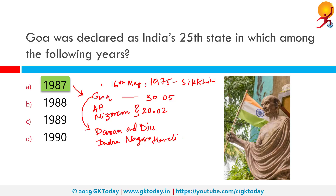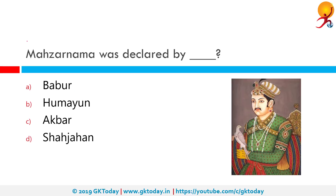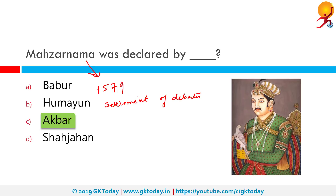Mazanama was declared by whom? The correct answer is Akbar. In 1579, Mazanama was declared by Akbar, stating that if there was any conflict in the views of debaters, the emperor was entitled to choose any interpretation. With this, Akbar reduced the dominance of the orthodox clergy. Mazanama was the idea of Abu Fazal and Faizi's father, asserting that the king's authority was higher than that of a Mujtahid, or doctor of faith.